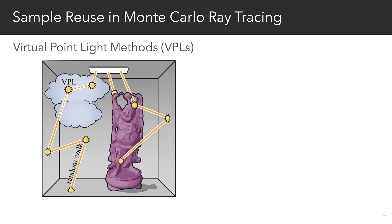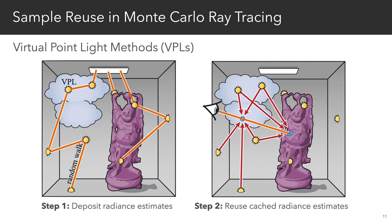Our method specifically takes inspiration from virtual point light methods, which first deposit radiance estimates in the scene, and then reuse these cached values to generate a radiance estimate at each pixel.